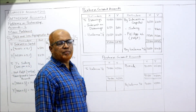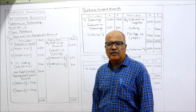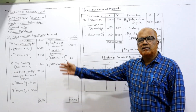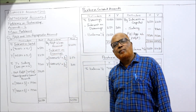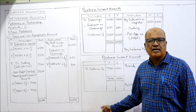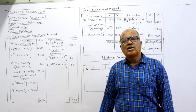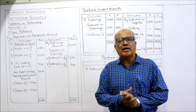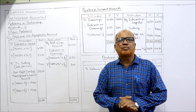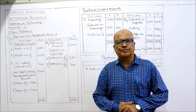That completes the first problem on partnership accounts — main problem number one. In this problem we prepared the profit and loss appropriation account, the current account, and the capital account. Inshallah we will continue with the next problem in the next video.